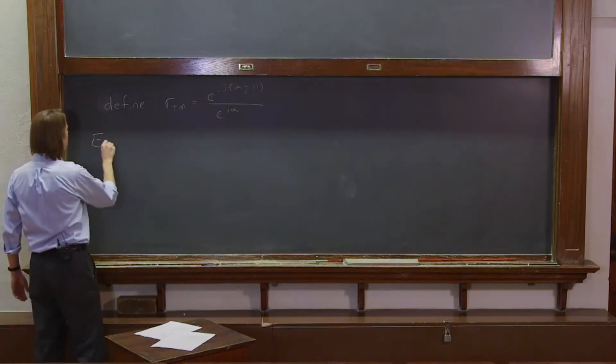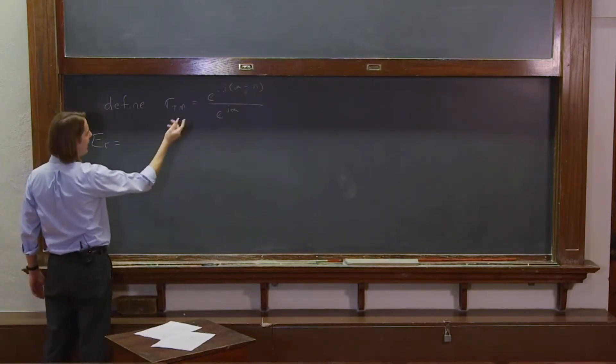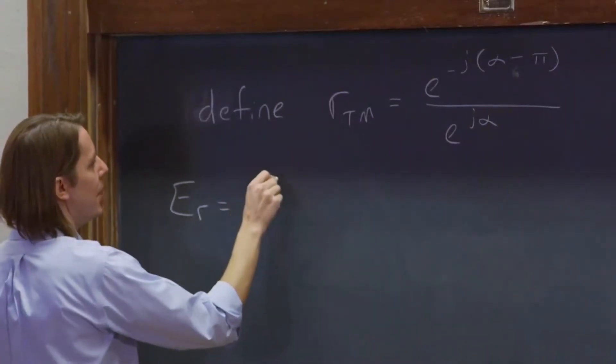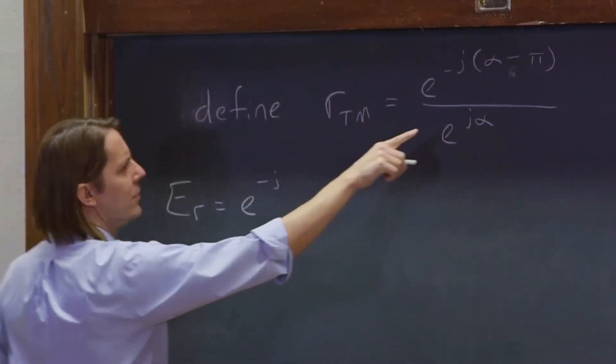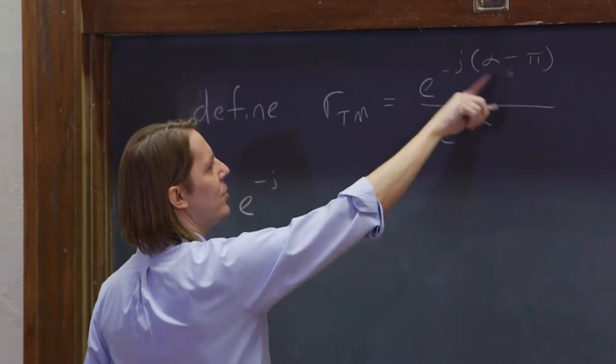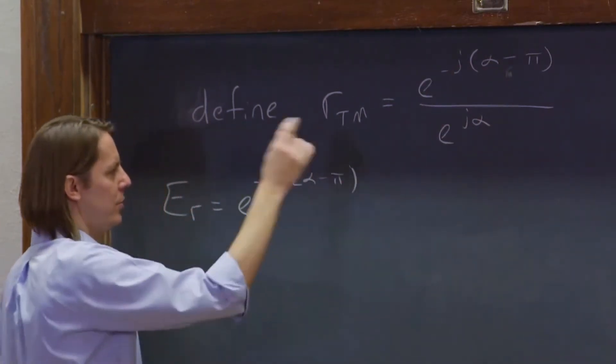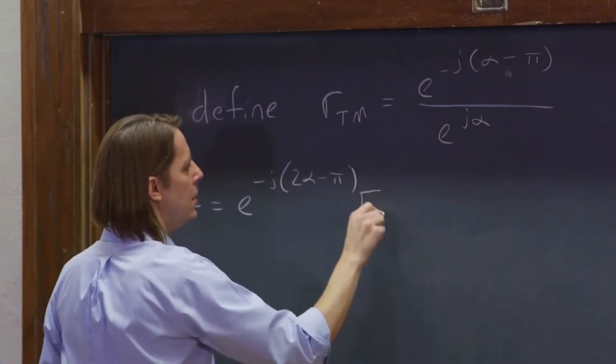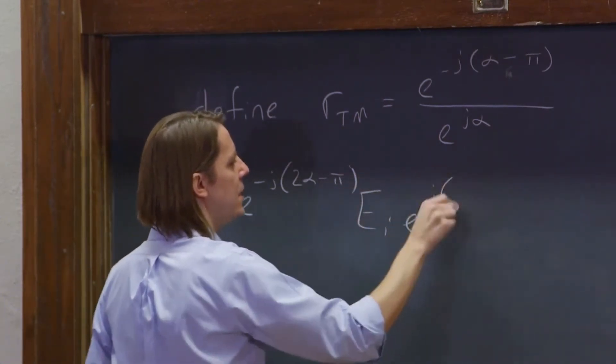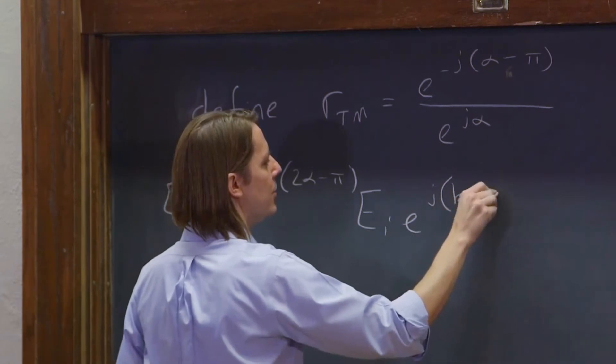That will give us ER equals that, e to minus j. Let's see, this will be a minus, so it'll go into there. It'll be 2 alpha minus pi. Once we sort of combine them, e incident, e to the j kz minus omega t.